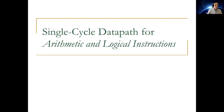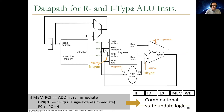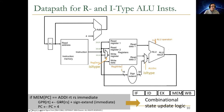Last time we were building a single-cycle data path for different types of instructions. We built the data path for R-type and I-type ALU instructions. The data path for R-type and I-type ALU instructions includes elements enabling execution of an ADDI instruction, which takes general-purpose register RS, adds to it a sign-extended immediate, and puts the result into general-purpose register RT. We need data path components to enable execution of this instruction.